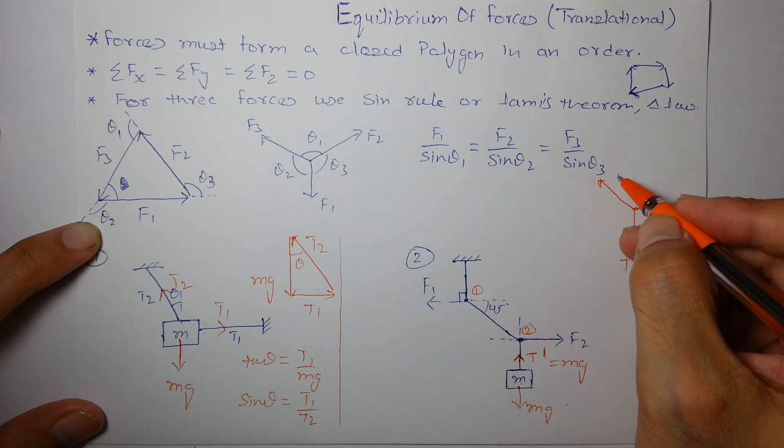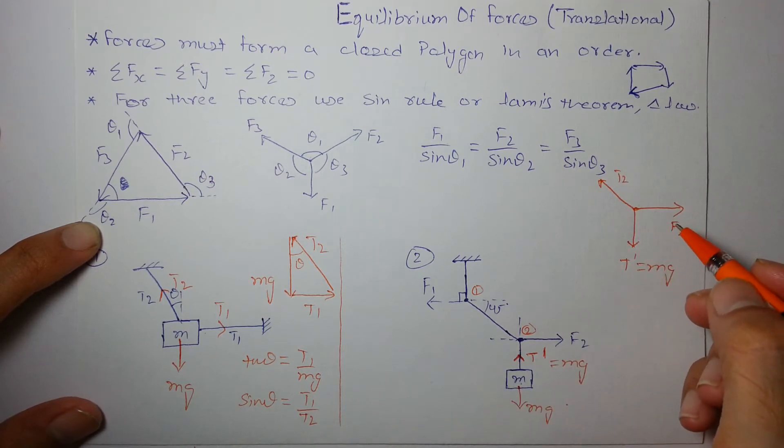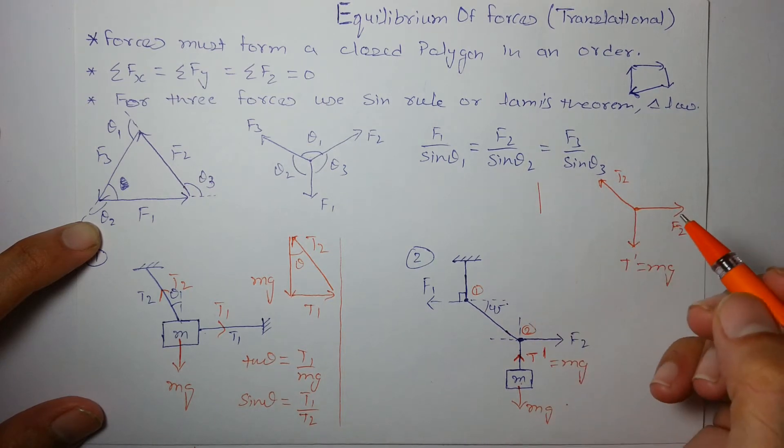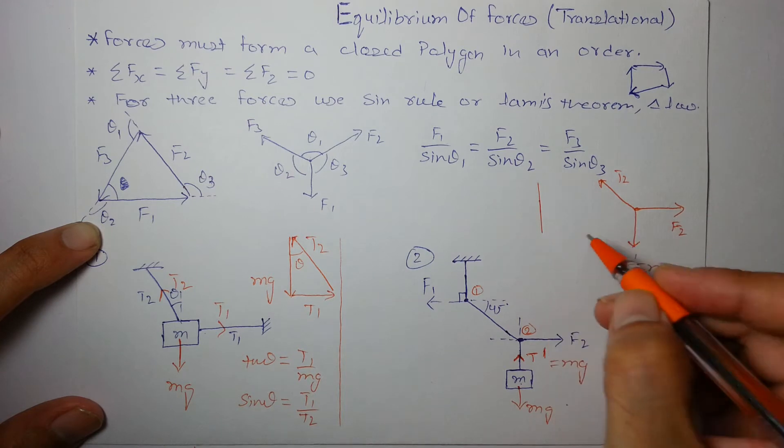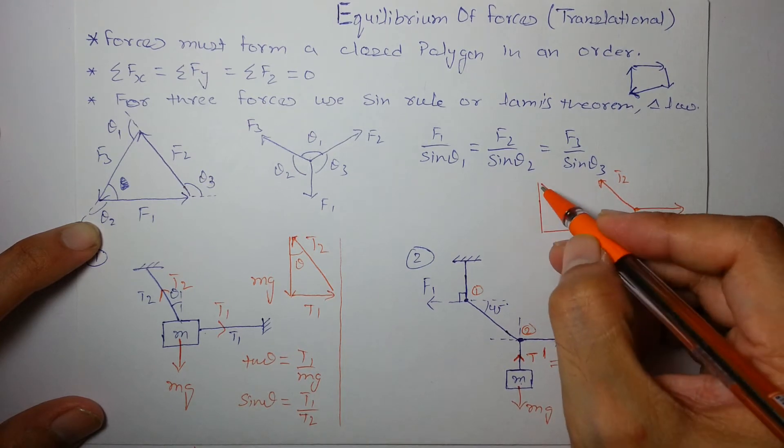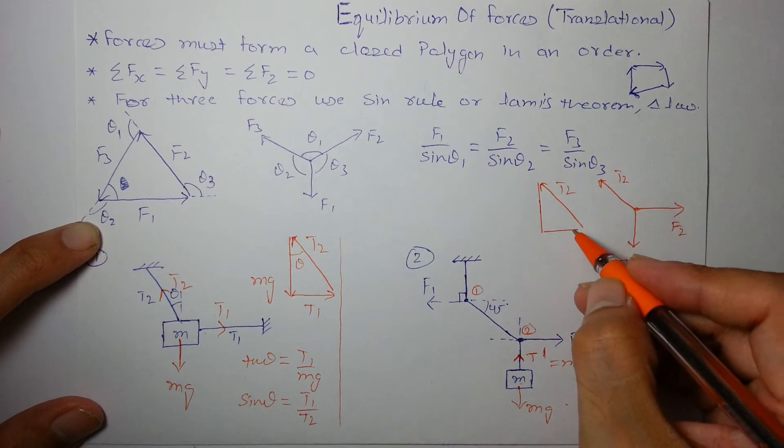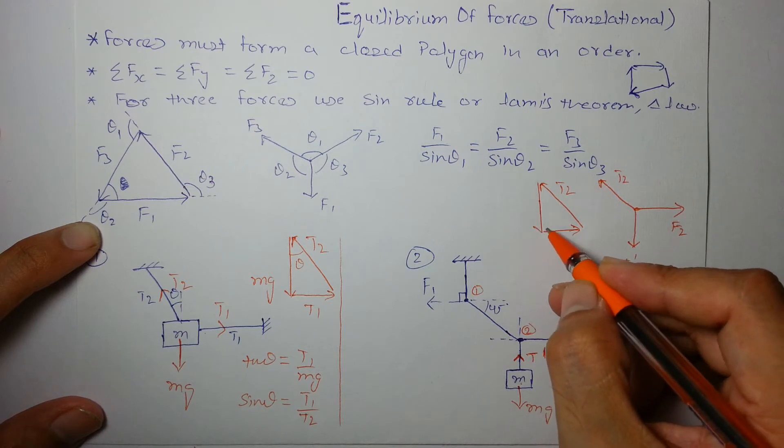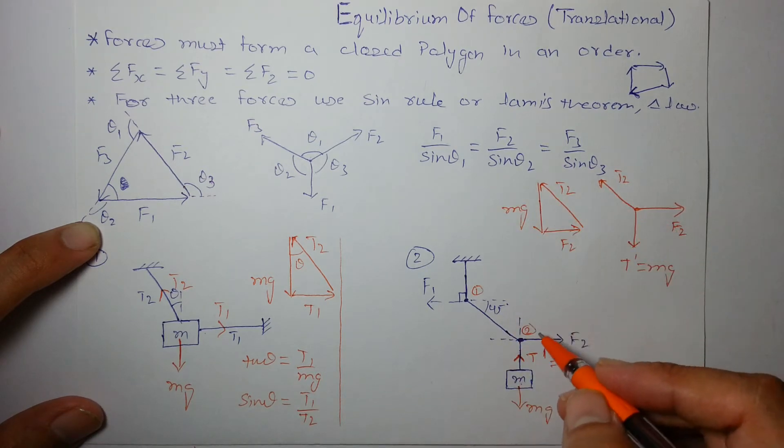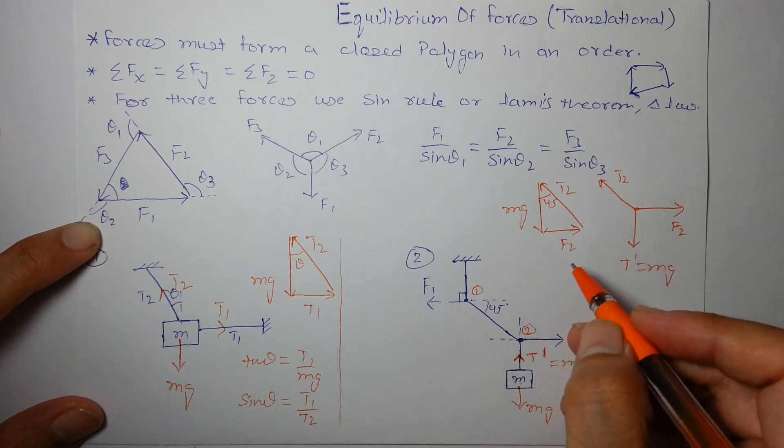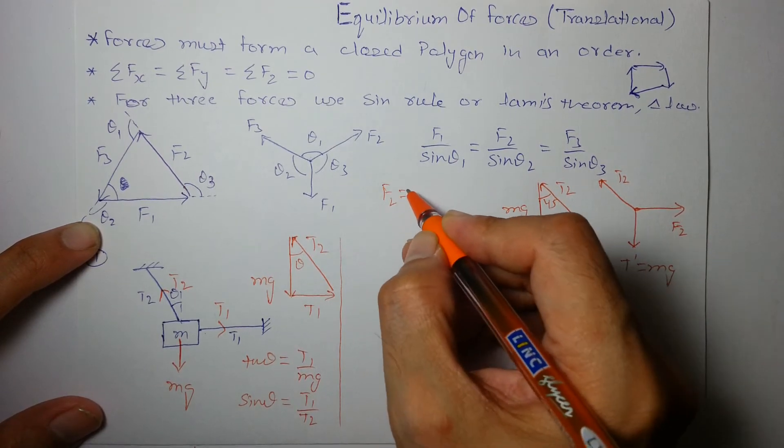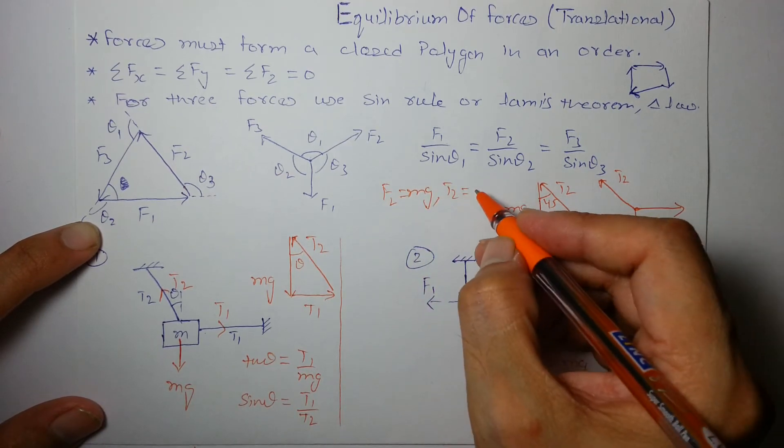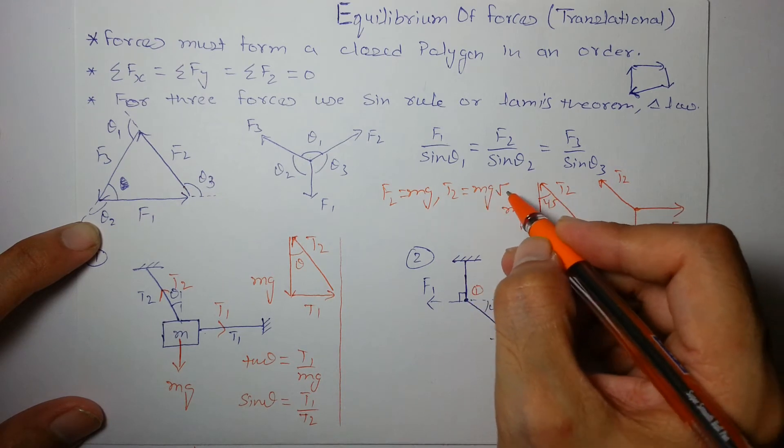So, they must form a triangle and forming a triangle, I can say this force is vertical, this is this and this is like this. t2, this force is f2 and this is mg and this angle is given as 45. So, we can say f2 is nothing but mg using tan theta as 1 and t2 is nothing but mg into root 2.